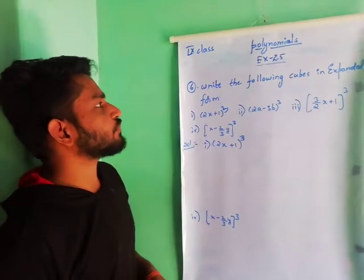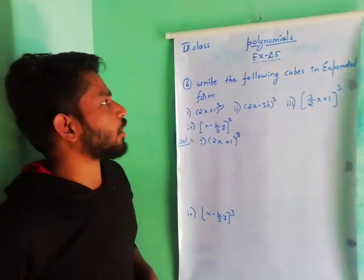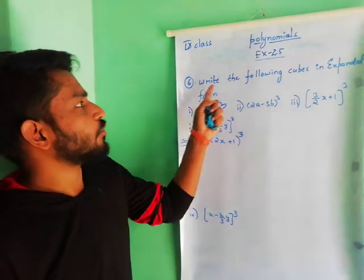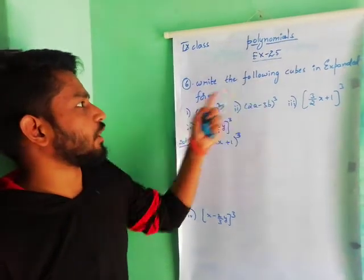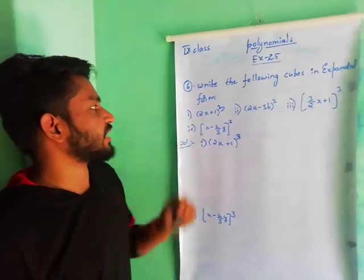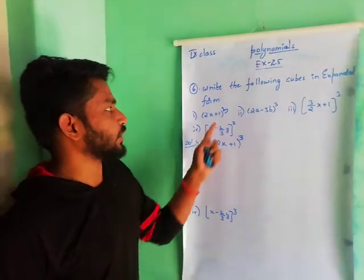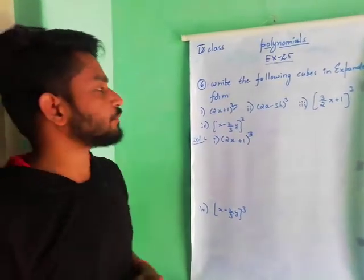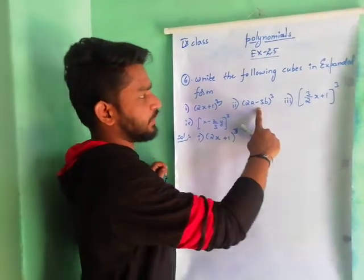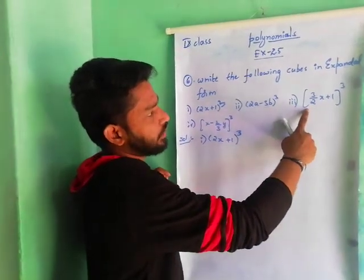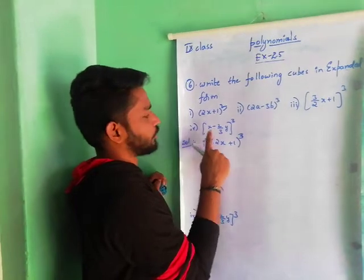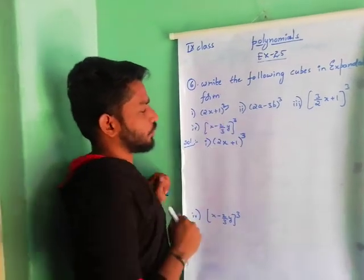Coming to the 6th one: write the following cubes in expanded form. First one is (2x + 1) whole cube. Second one, (2a - 3b) whole cube. Third one, (3/2 x + 1) whole cube. Fourth one, (x - 2/3 y) whole cube.